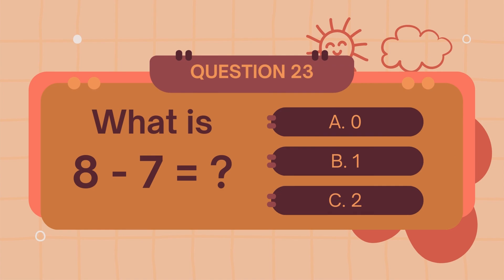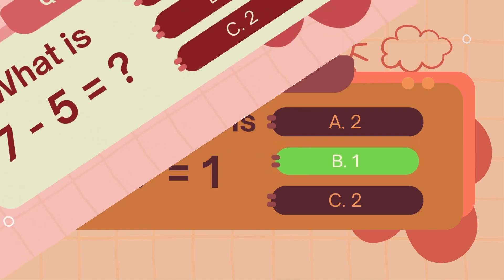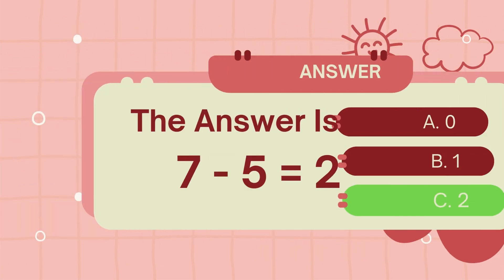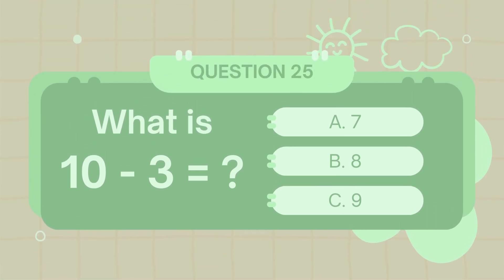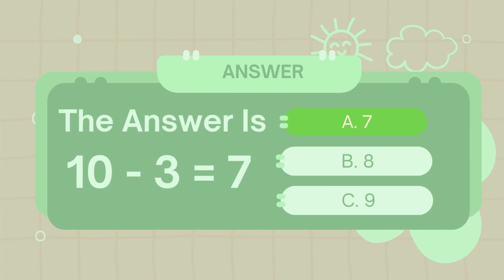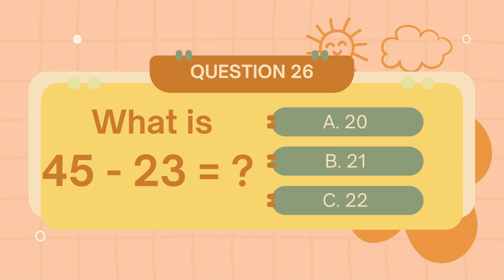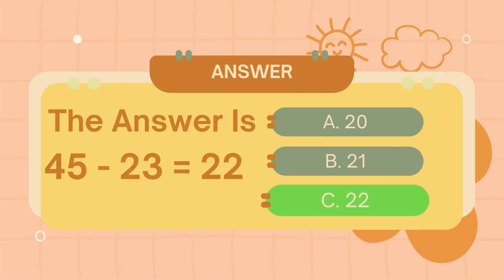What is 8 minus 7? The answer is 1. What is 7 minus 5? The answer is 2.